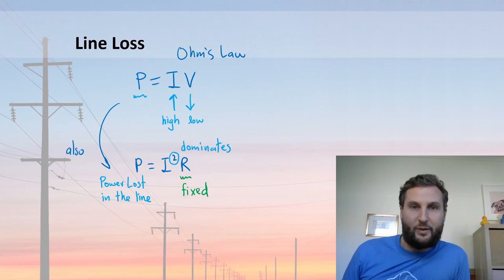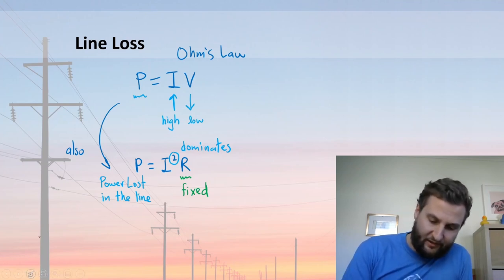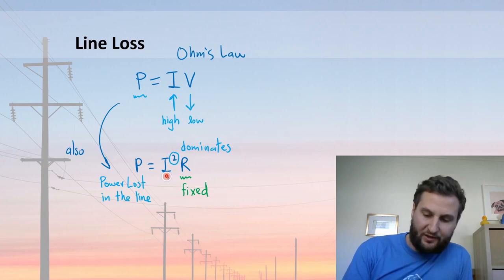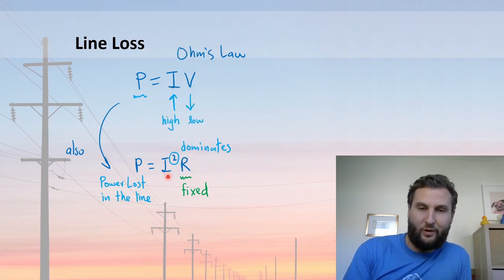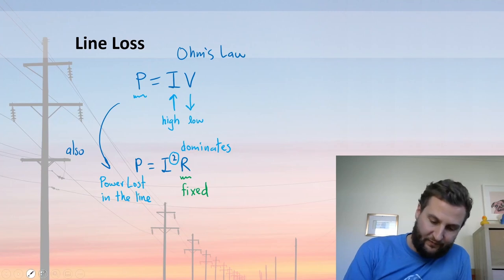And if we think of P as being power lost in the line, then we want I to be as small as possible, given that R is fixed, and that will reduce my power lost in the line.